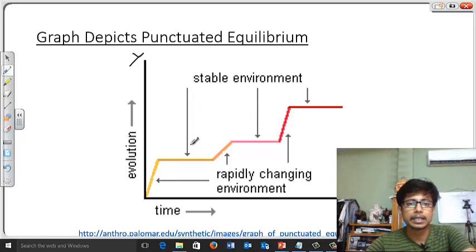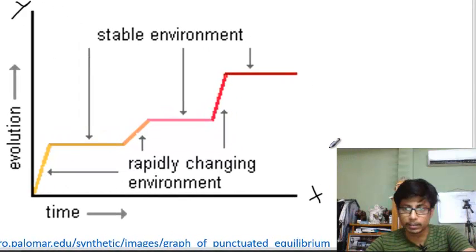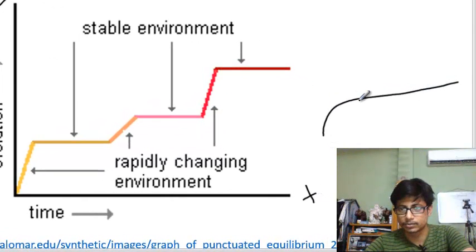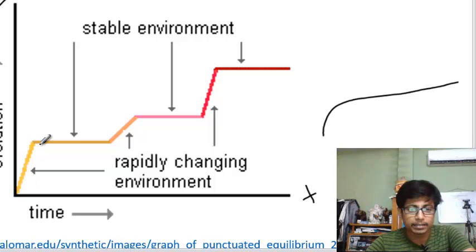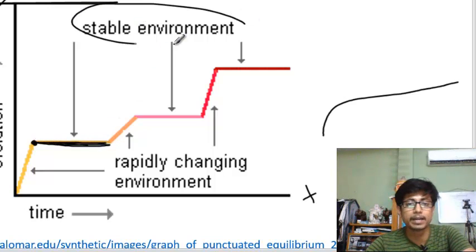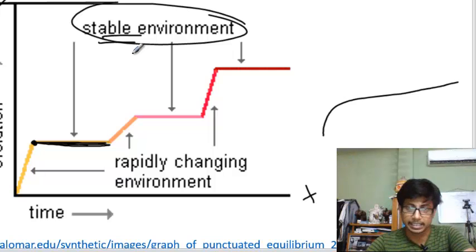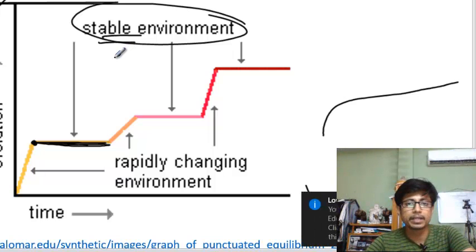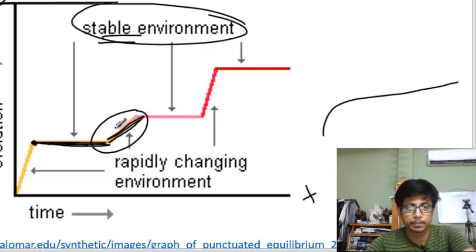But in this case, you see that once the species is developed, the ancestor species is developed, it will remain as it is for some time. It will stay there for some time while the environment was stable in nature. But once the environment becomes less stable, then only they have a sudden change and this change is denoted by this peak that we see.